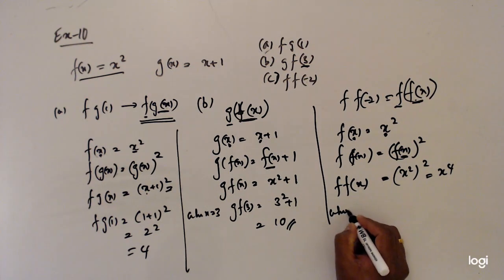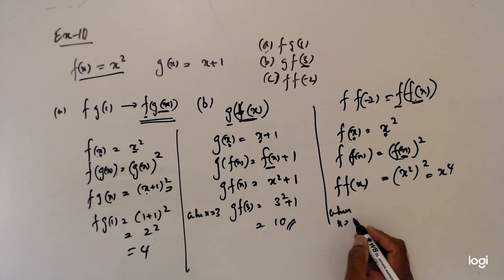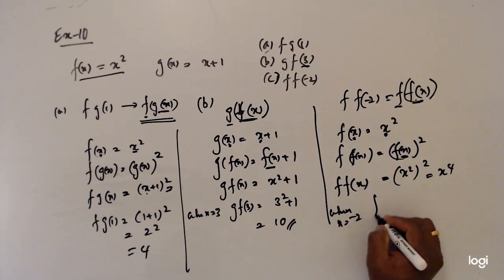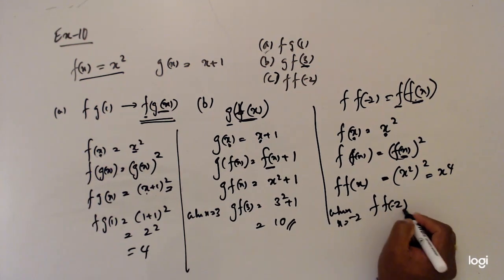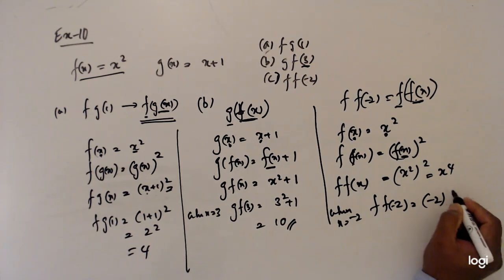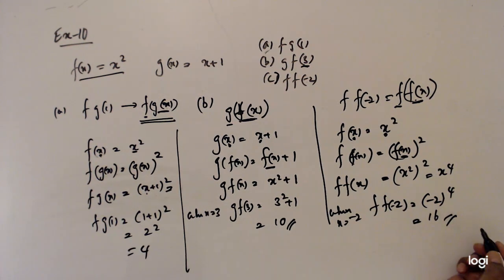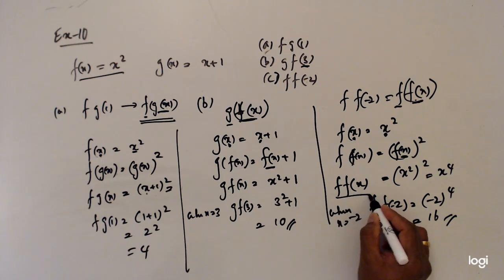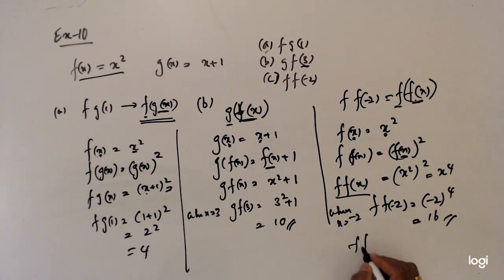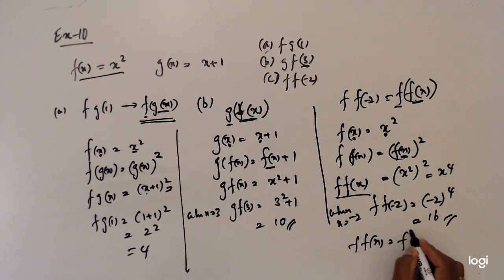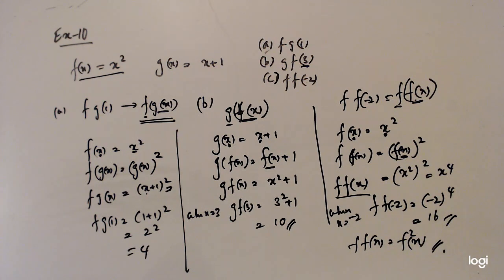Now when x equals -2, ff(-2) equals (-2) to the power 4, which is 16. You can also write f(f(x)) in short notation as f²(x).